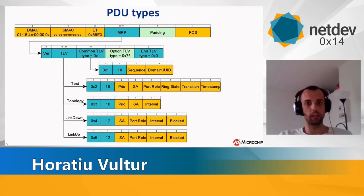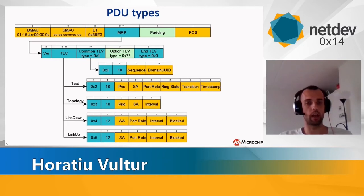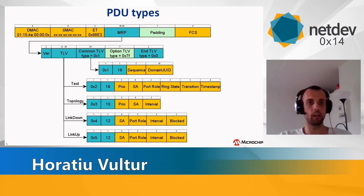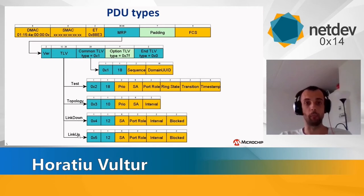Now, to present the PDUs used by MRP — they have their own PDUs. The destination MAC is a multicast address where the last byte depends on the MRP PDU type. The source MAC is the MAC of the port. It has its own EtherType. The MRP PDU is TLV-based, but it has a version field that is two bytes with version number one. Then it's TLV-based, with TLVs like test, topology, link down, link up, followed by a common TLV, an optional TLV, and it finishes with the end TLV.